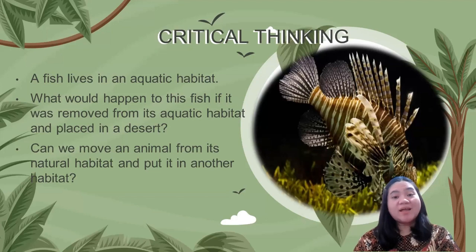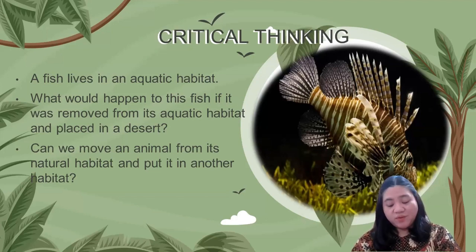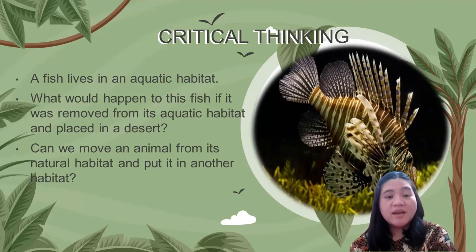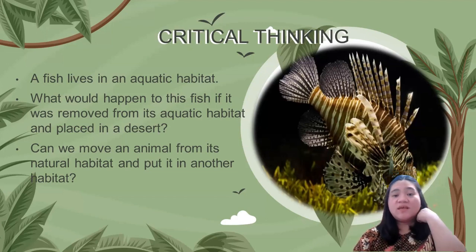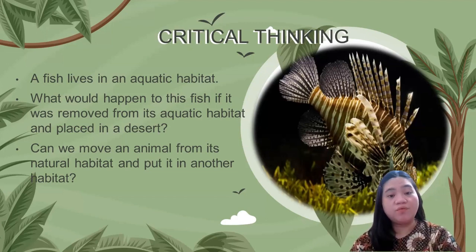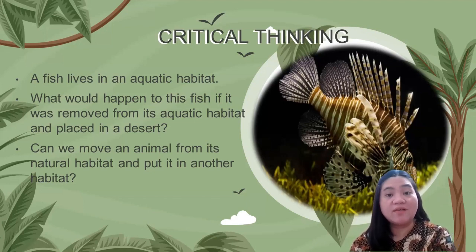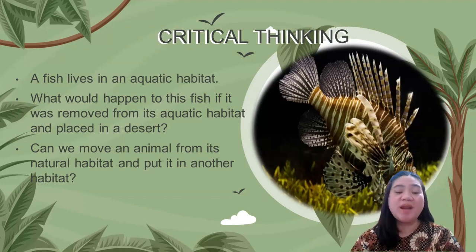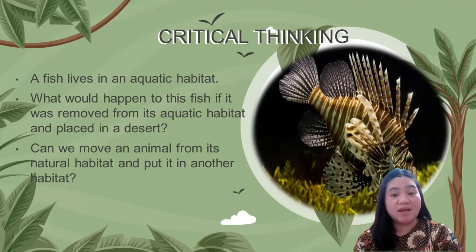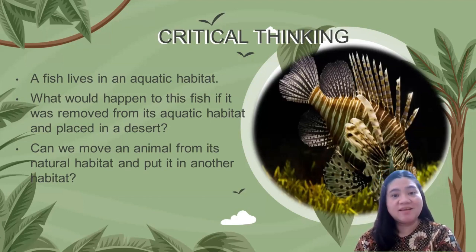Now, please look at the picture and think about this: a fish lives in an aquatic habitat. What would happen to this fish if it was removed from its aquatic habitat and placed in a desert? And can we move an animal from its natural habitat and put it in another habitat? Please answer this in Google Classroom.